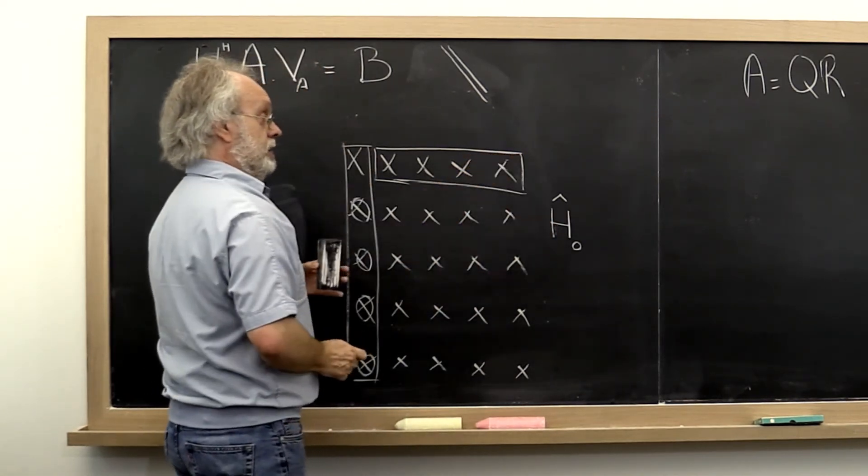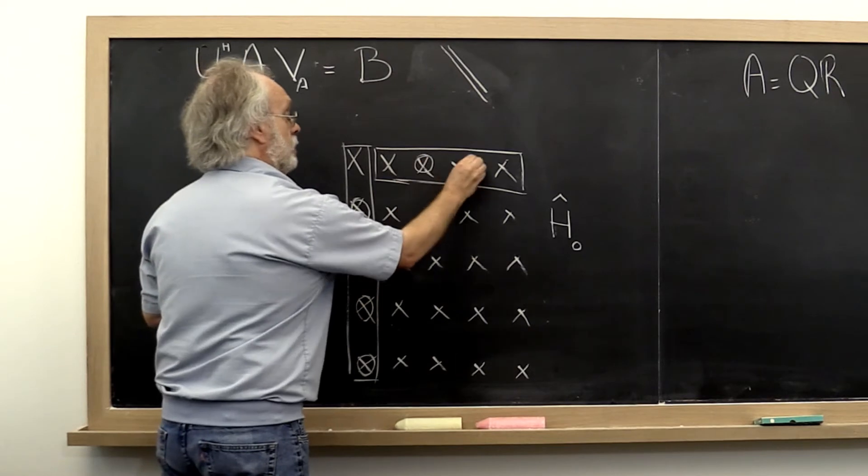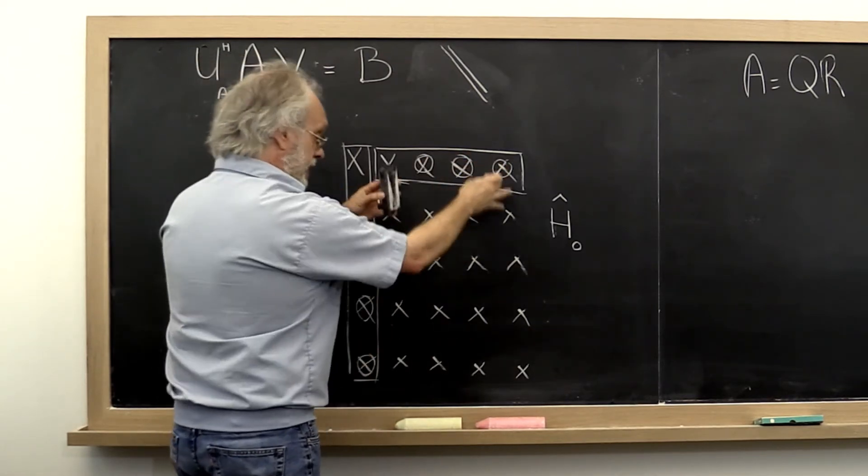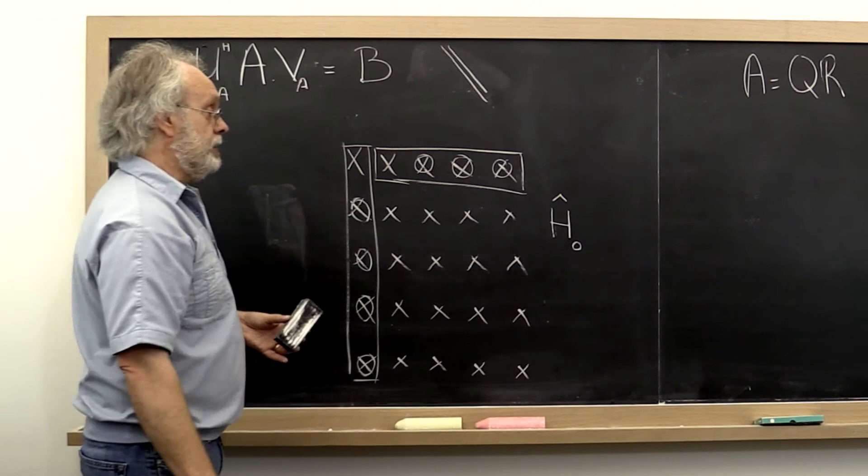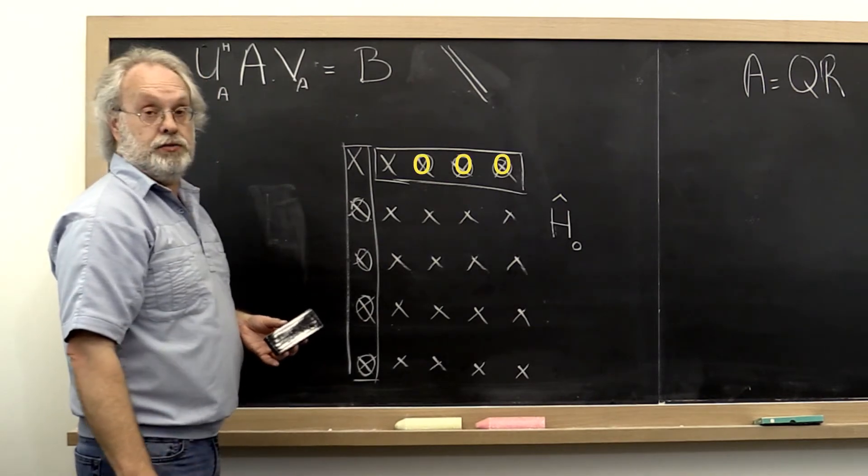So we can compute this Householder transform from this vector in such a way that we get zeros right here, and then apply that Householder transform to the rest of the matrix.